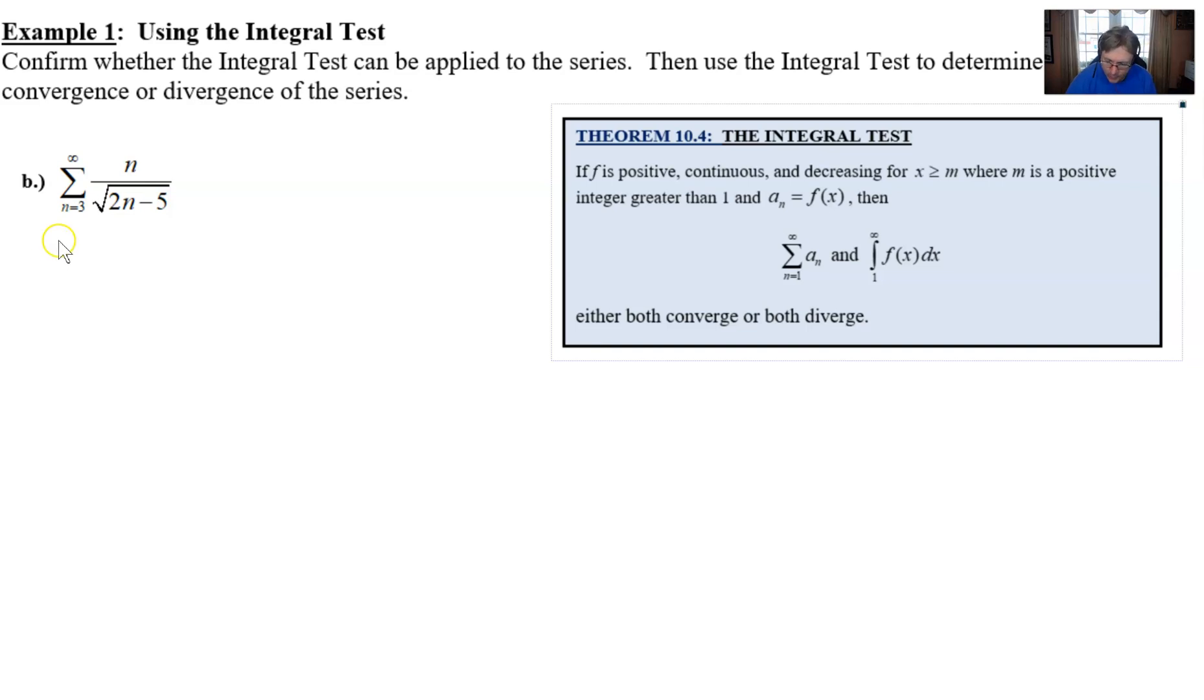First of all, let's equate a function f of x to this expression a sub n. And what we'll simply do is we're going to call f of x, x over the square root of 2x minus 5. So where do we go from here? Well, next thing that we're going to do is we're going to start going through our criteria.